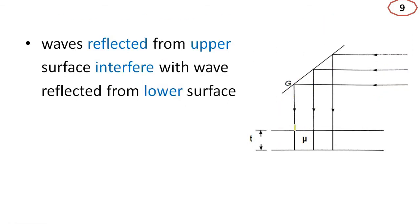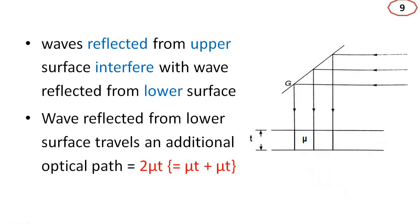The light can be reflected from the upper surface of the thin film. Also, it can transmit into the thin film and be reflected from the lower surface. We can compare the waves reflecting from the upper surface with the waves reflecting from the lower surface.